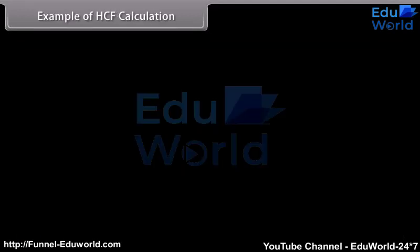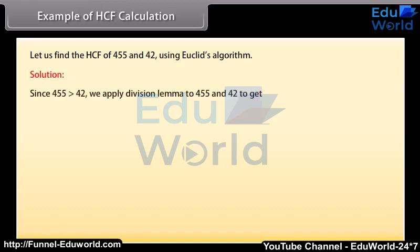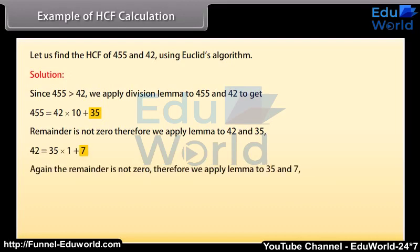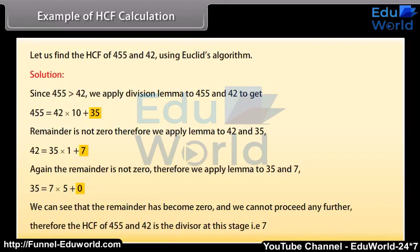Example: Find the HCF of 455 and 42 using Euclid's algorithm. Since 455 > 42, apply division lemma: 455 = 42 × 10 + 35. Remainder is not 0, so apply lemma to 42 and 35: 42 = 35 × 1 + 7. Again remainder is not 0, so apply lemma to 35 and 7: 35 = 7 × 5 + 0. The remainder is now 0, so the HCF of 455 and 42 is 7, the divisor at this stage.